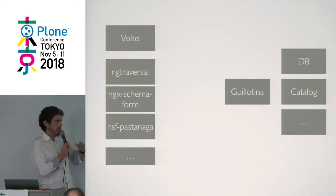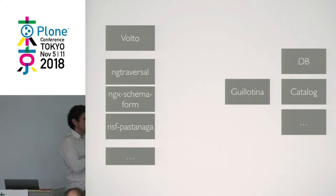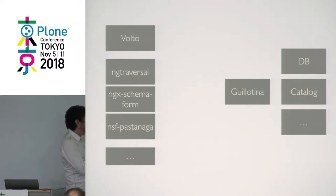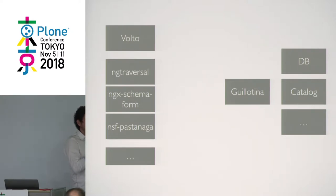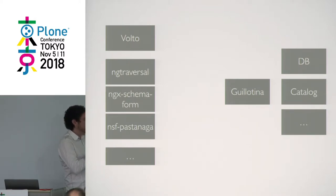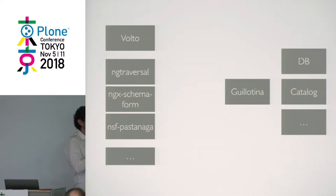On the Plone community we have Volto which does the front-end in React, we have Angular Traversal, ng-schema-form, and Pastanaga on the Angular side — components to build your applications with Angular or Ionic. They work really well with the Plone REST API, so we wanted to fill the gap between the Guillotina system and all this front-end ecosystem.